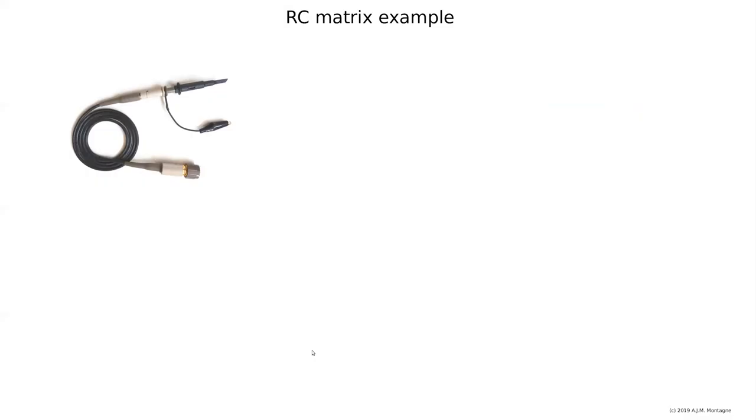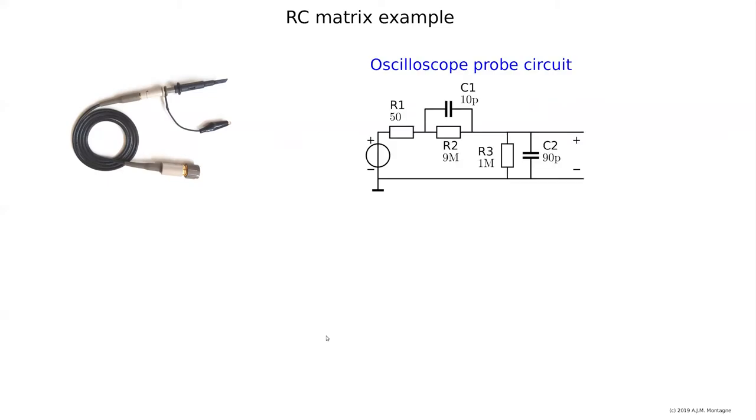Let's look at a probe for an oscilloscope that's very practical and see what we can say about tuning such a probe. Here is the equivalent circuit: the voltage source with a 50 ohm is my signal source, and I connect it to the probe.